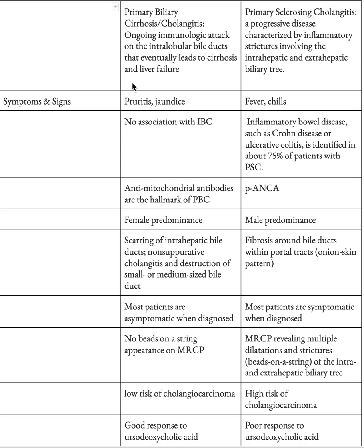For symptoms and signs, in PBC you typically see pruritus and jaundice, whereas in PSC you see fever and chills most commonly. They can be interchangeable, but these are the most common presentations in each disease.